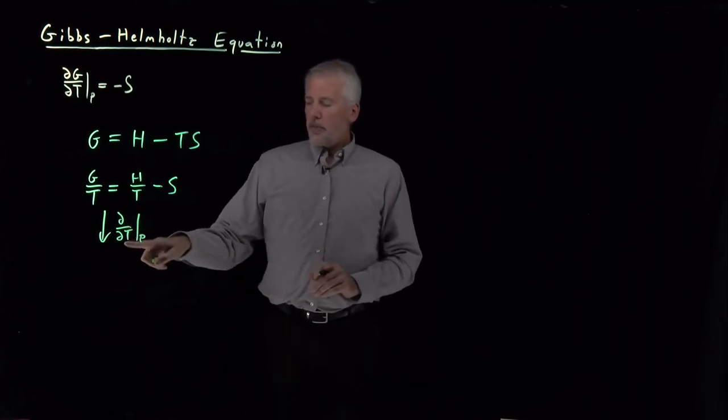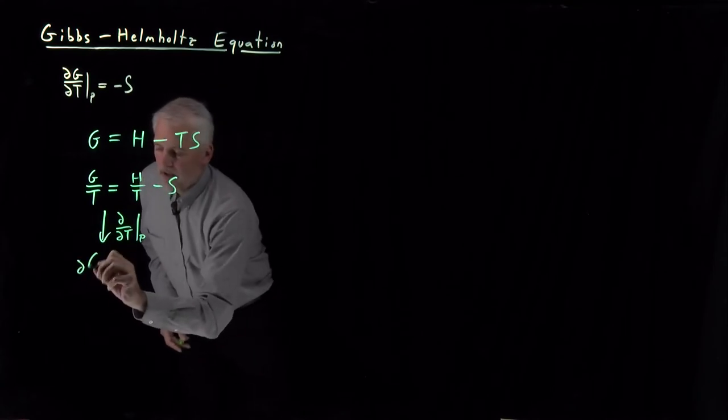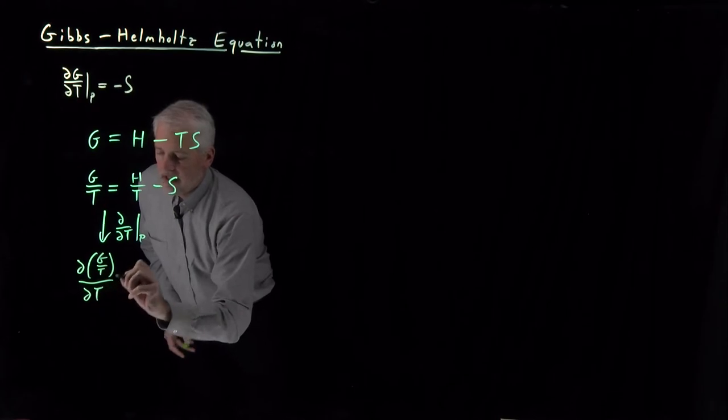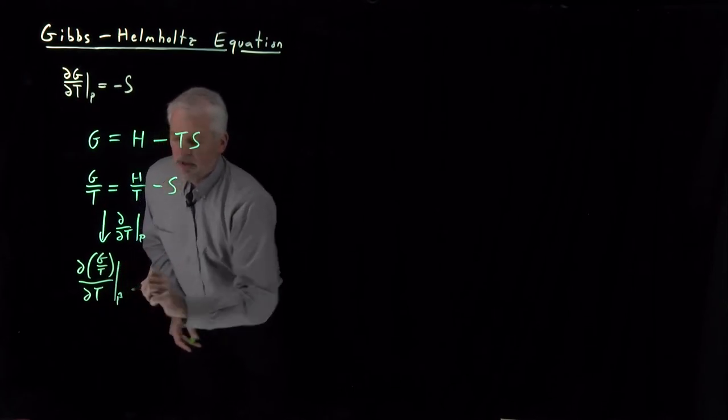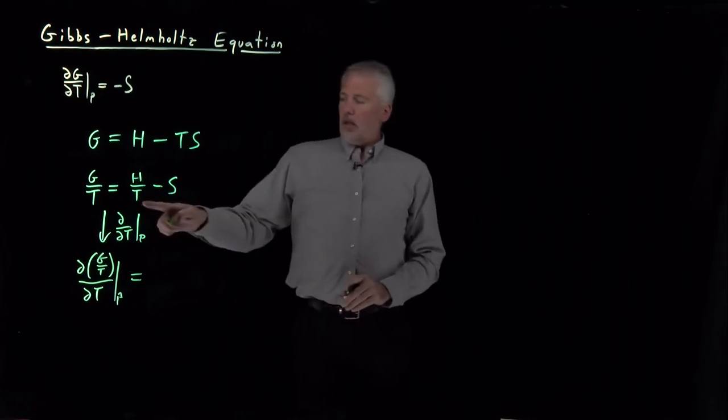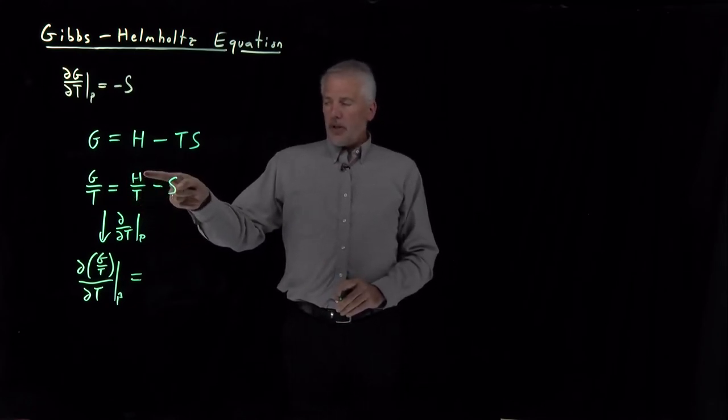Take the temperature derivative at constant pressure. When I do that on the left, I'm just going to write the derivative of G over T with respect to T at constant pressure. On the right, I'll do that slightly differently.